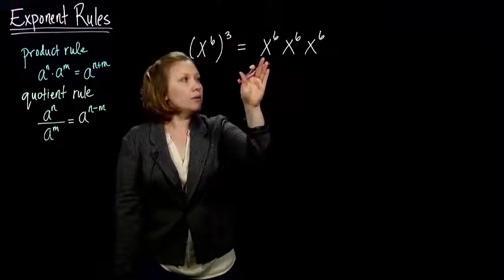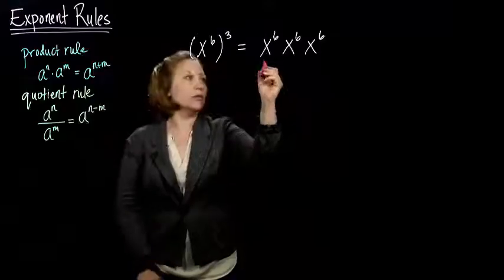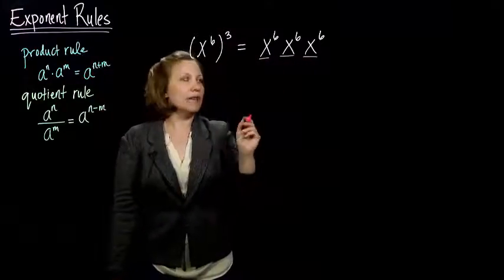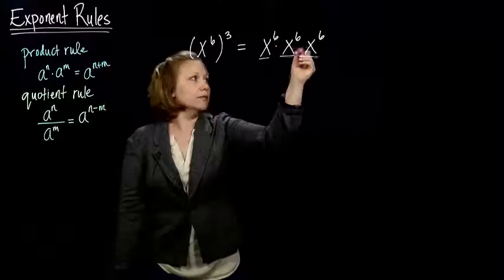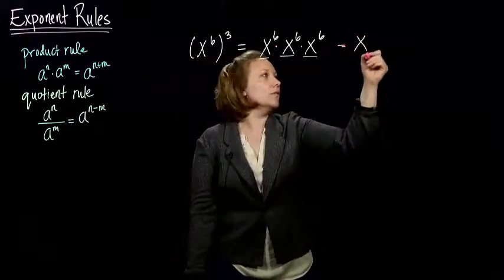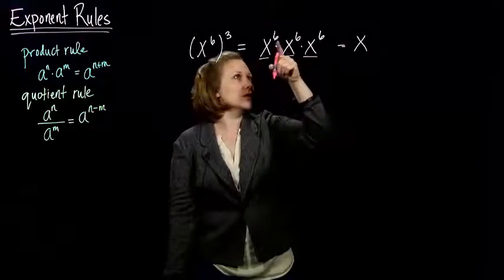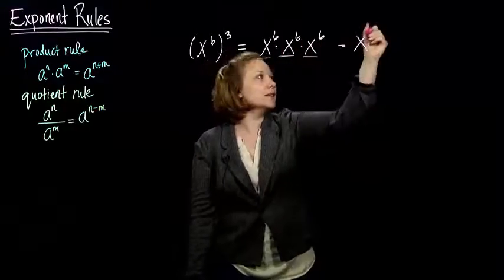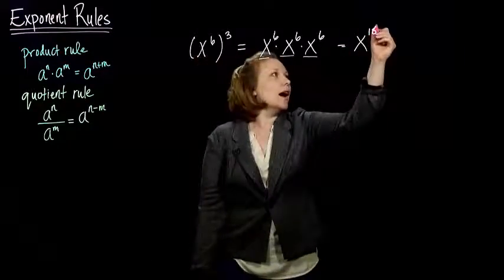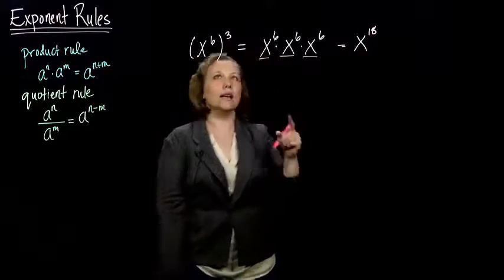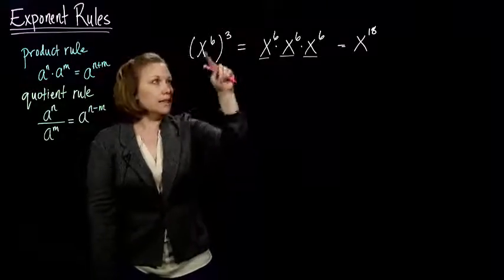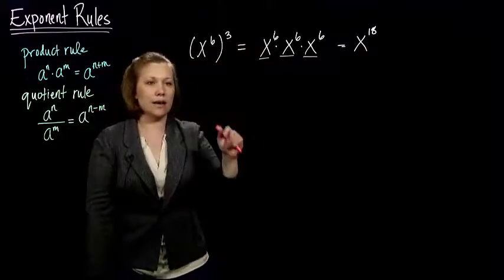Then we can use our product rule. We've got the same base and they're being multiplied together, so that tells me I take all of these and add the exponents together. So 6 plus 6 plus 6 is 18. How is 18 related to the 6 and the 3? Well, 18 is the same as 6 times 3.